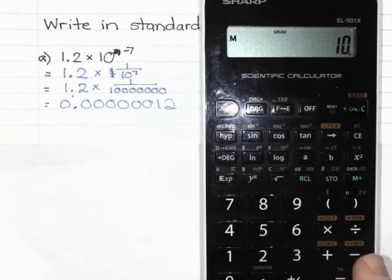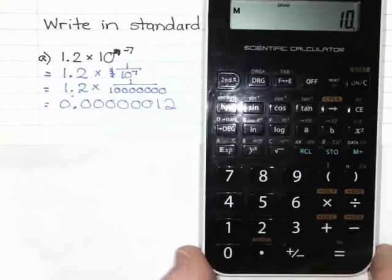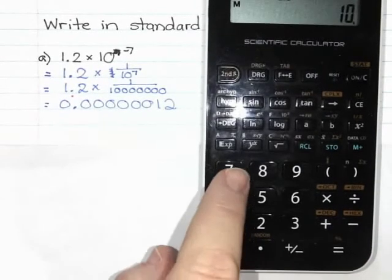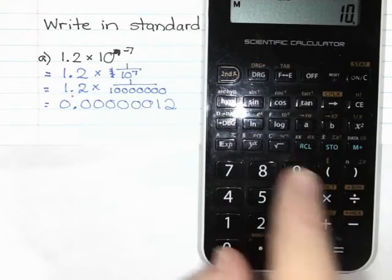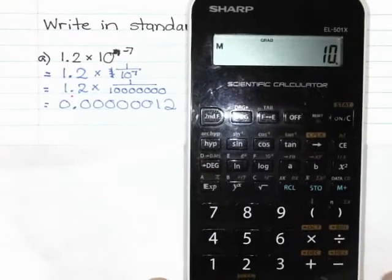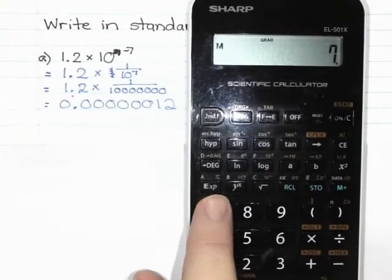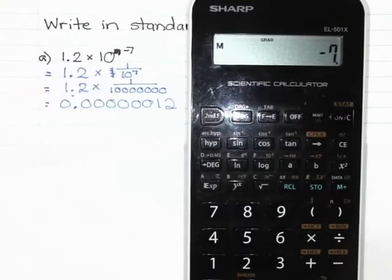Now when you go to put in your 7, you can't just do your subtract key, you need to do your negative key. So I have a little plus-minus down here. Sometimes your negative might be above the 7 or the 8 or the 9 or somewhere in this region up here.